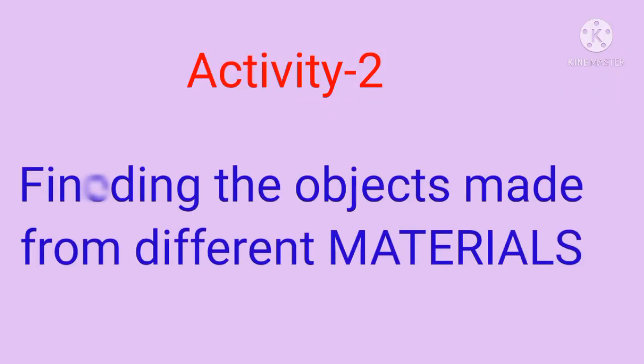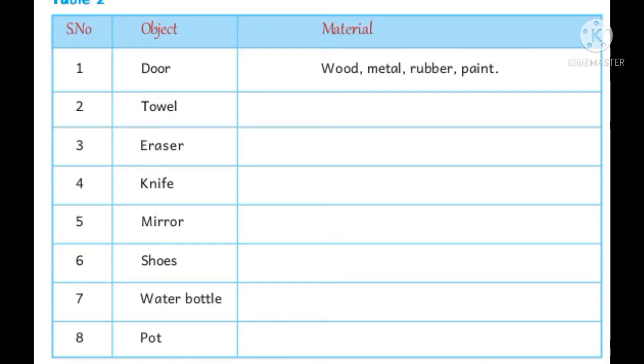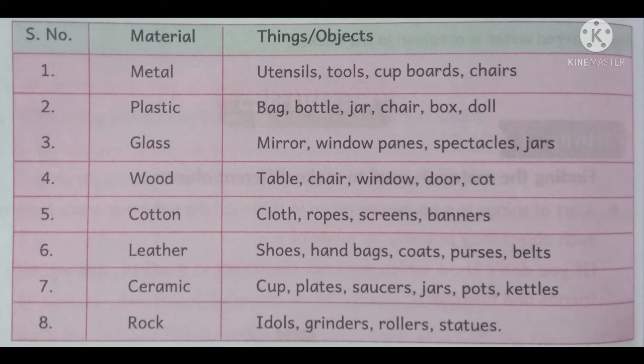The activity is finding the objects made from different materials. Here we have one table — pause the video and try to complete it. Let us check your answers. The first one is metal. By using metal, we can prepare utensils, tools, cupboards, chairs, etc.